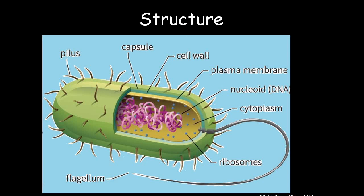This is a complete cell structure. You have pilus, capsule — these are the outer three membranes: the capsule, the cell wall, and the inner plasma membrane, a three-layer structure. Then we have the nucleoid, which is a DNA highly coiled structure. Between the nucleoid and the inner cell membrane is the cytoplasm. Then we have flagella and ribosome — the 70S ribosome. Each of these structures will be described in detail briefly.